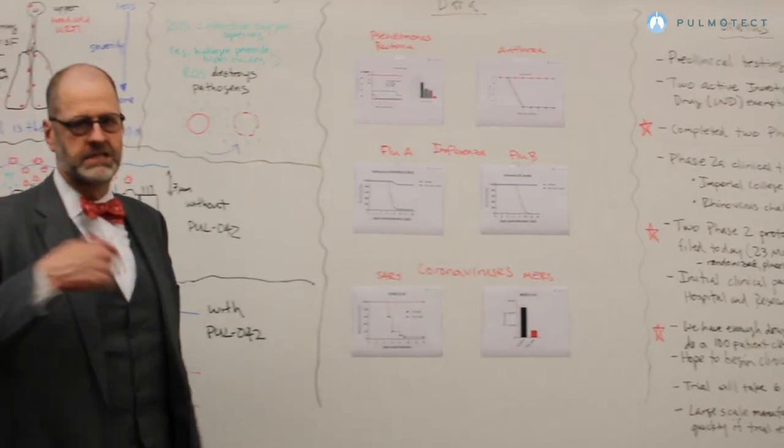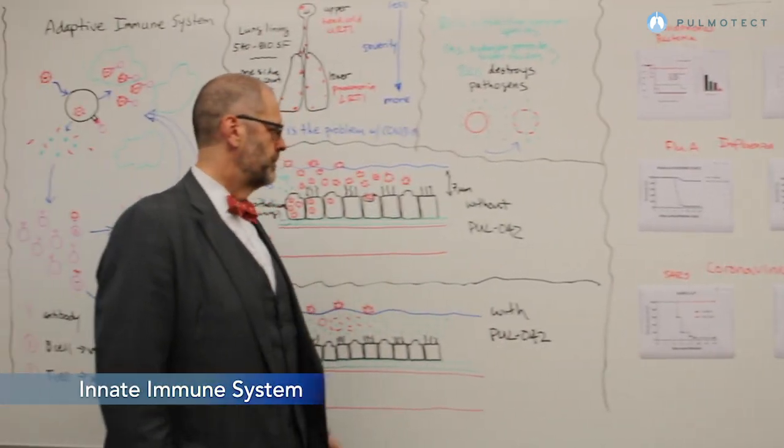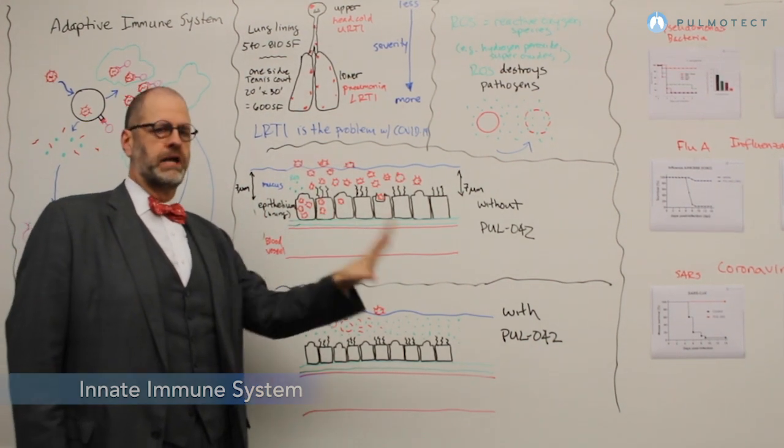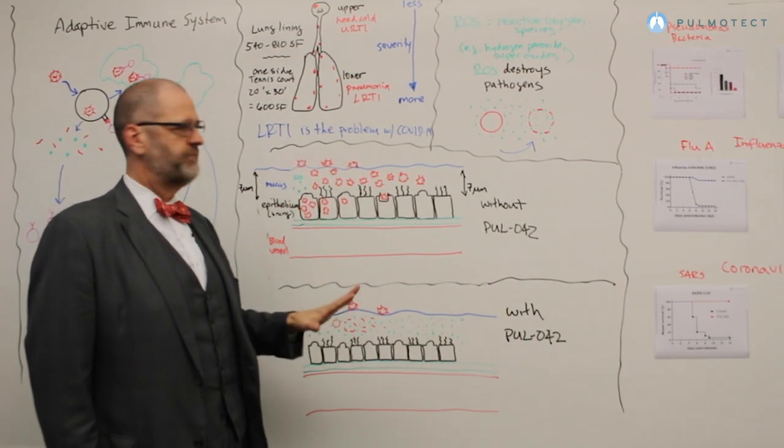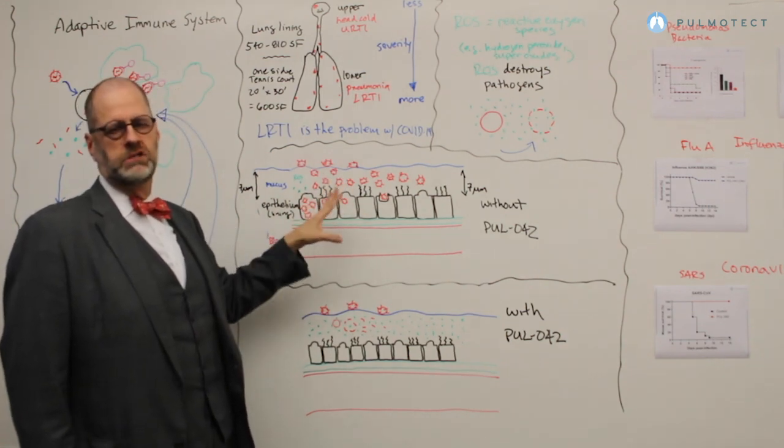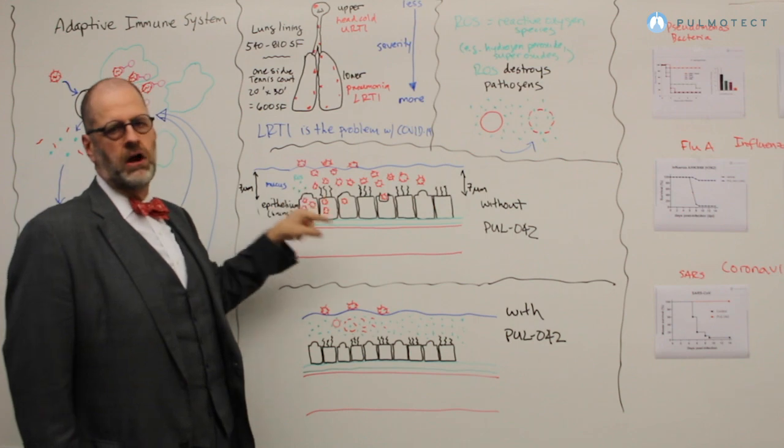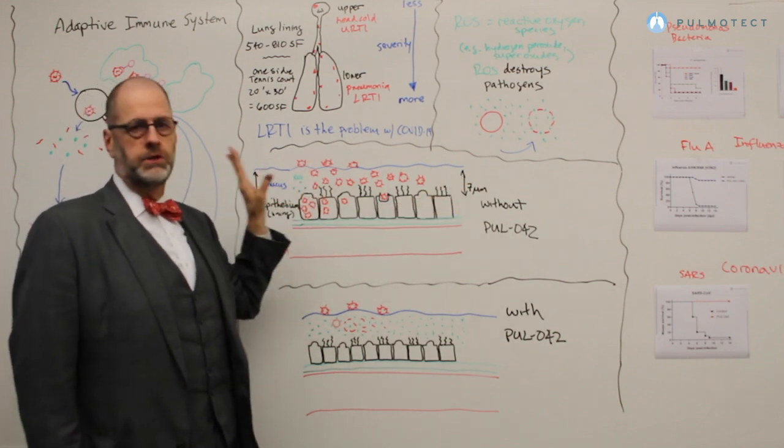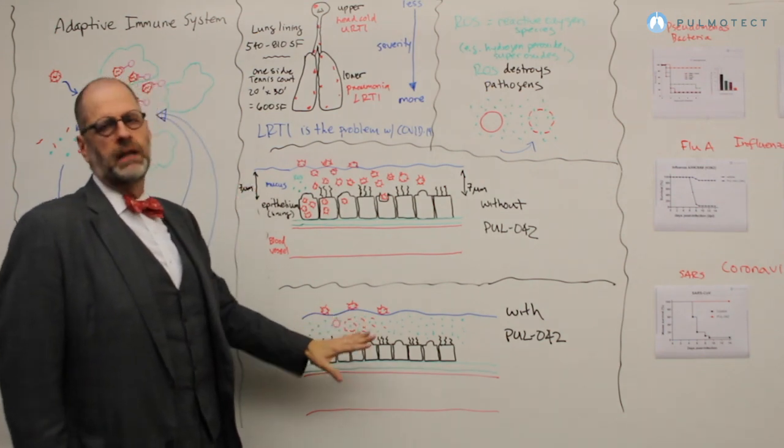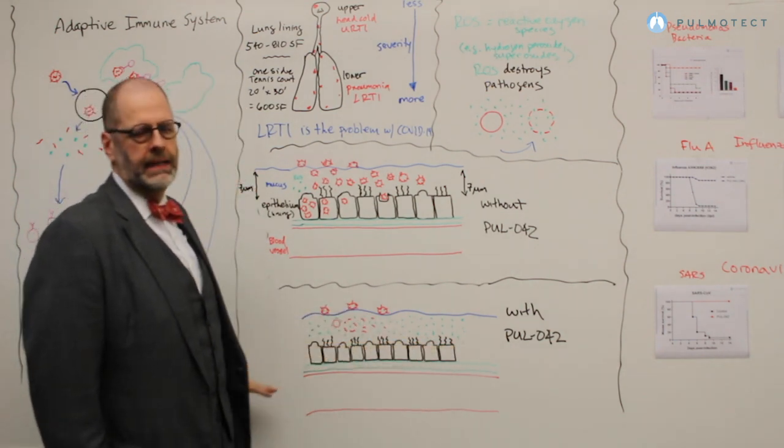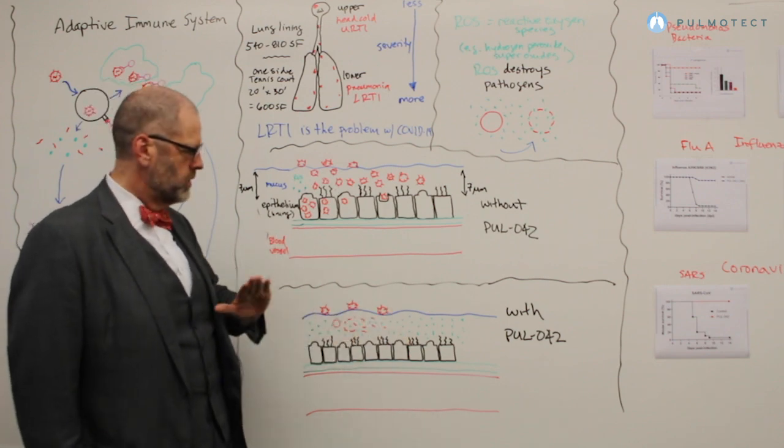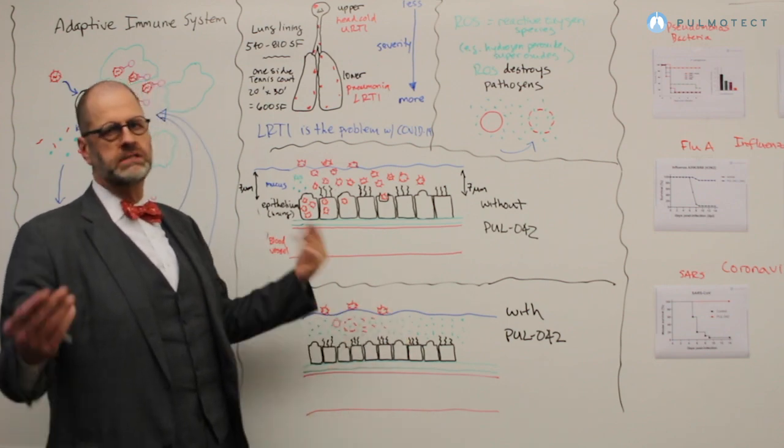Why is that the case? It's because of the innate immune system. In your lungs, the innate immune system is the frontline defense that protects you against viral and bacterial and fungal infections. It's an arms race when you get a virus that enters the lungs. Does the virus infect the lungs, and you get pneumonia, or are you able to fight it off? What we do is we stimulate the existing lung lining, that epithelial layer with our drug, Pol 42.